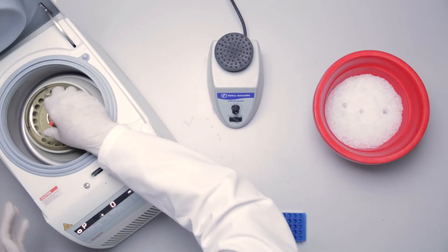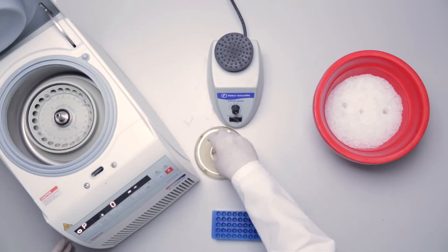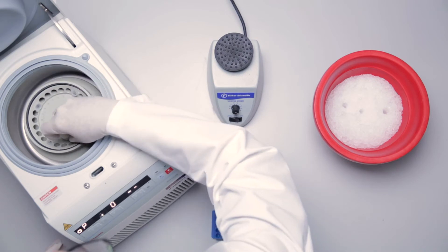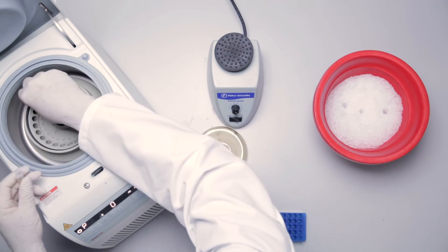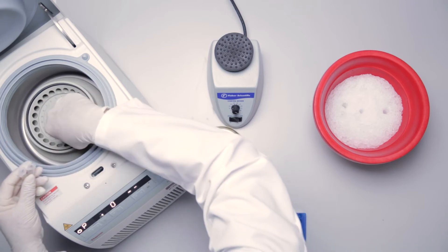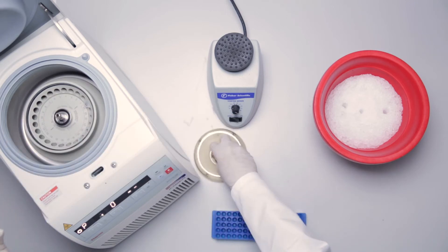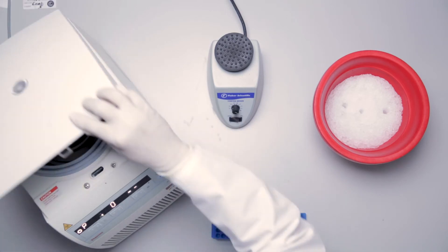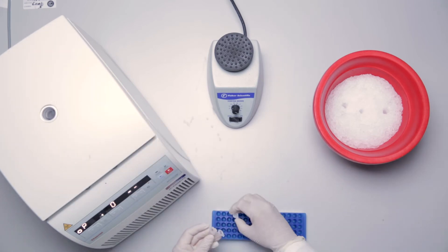If dilution is required, dilute serum or plasma samples in 1X universal assay buffer. For dilution of cell culture supernatant samples, use cell culture medium that was used to culture the cells. Be sure to note if there is a recommended sample pre-dilution factor so that it can be applied during the analysis step.